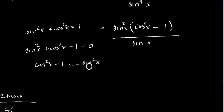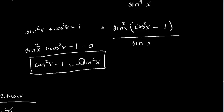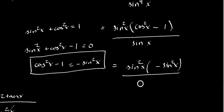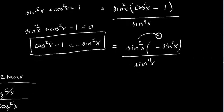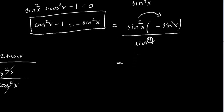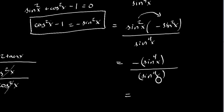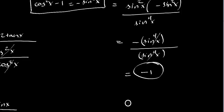So cos²x minus 1 can be written as negative sin²x. Substituting: minus sin²x over sin⁴x. Multiplying out: negative sin⁴x over sin⁴x. Cancelling, you have your negative — it's not just the negative, it's negative 1. So you're left with negative 1. And that is the correct answer.